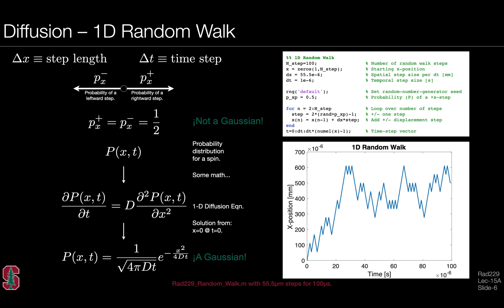With some mathematical work, we can define the probability distribution for a spin — that is, the likely position for a spin or family of spins after some period of time. This gives rise to a one-dimensional partial differential equation describing the diffusion process. The fundamental non-Gaussian underlying process gives rise to a Gaussian distribution at the population level, where the probability distribution depends on the diffusion coefficient and time.